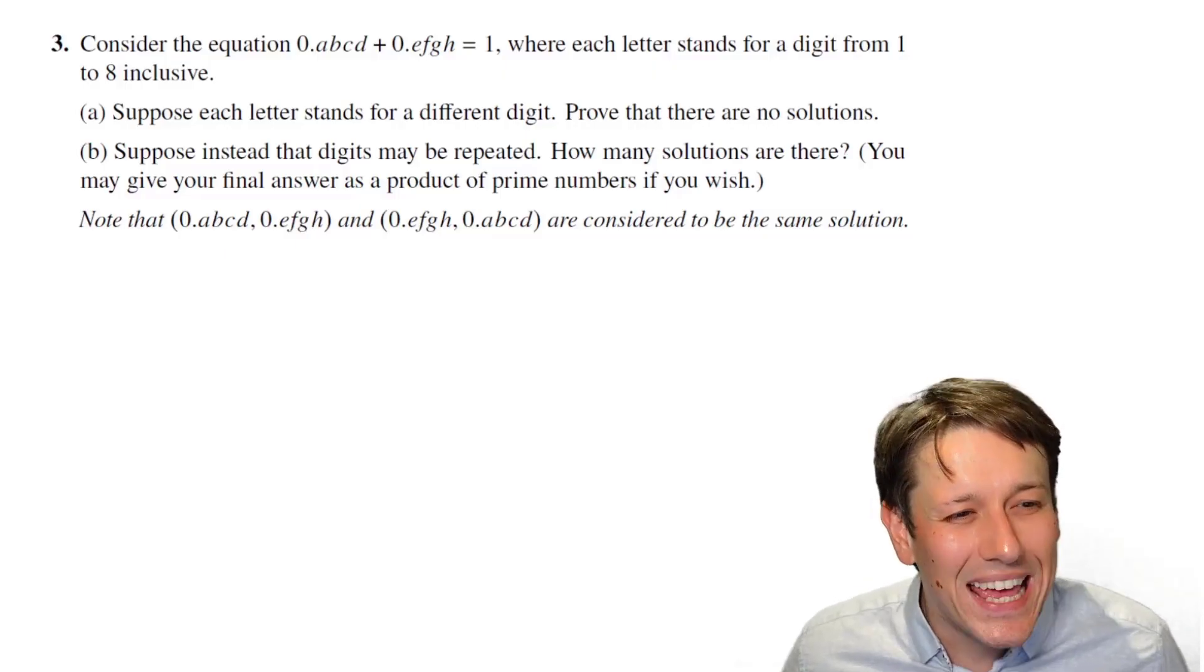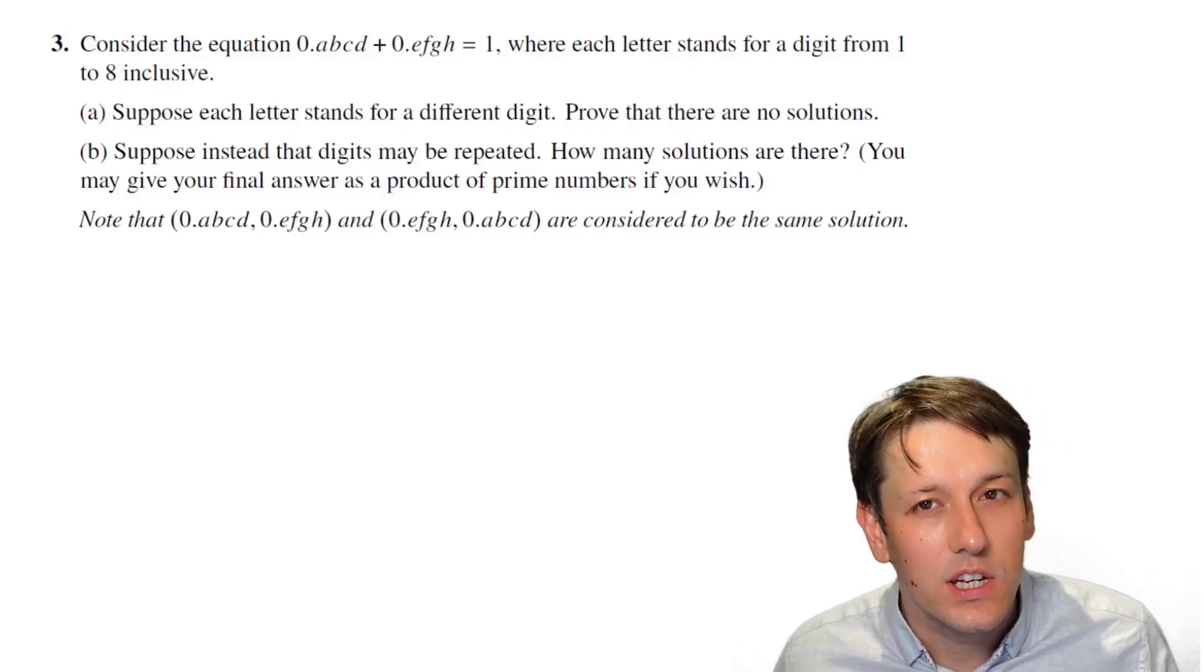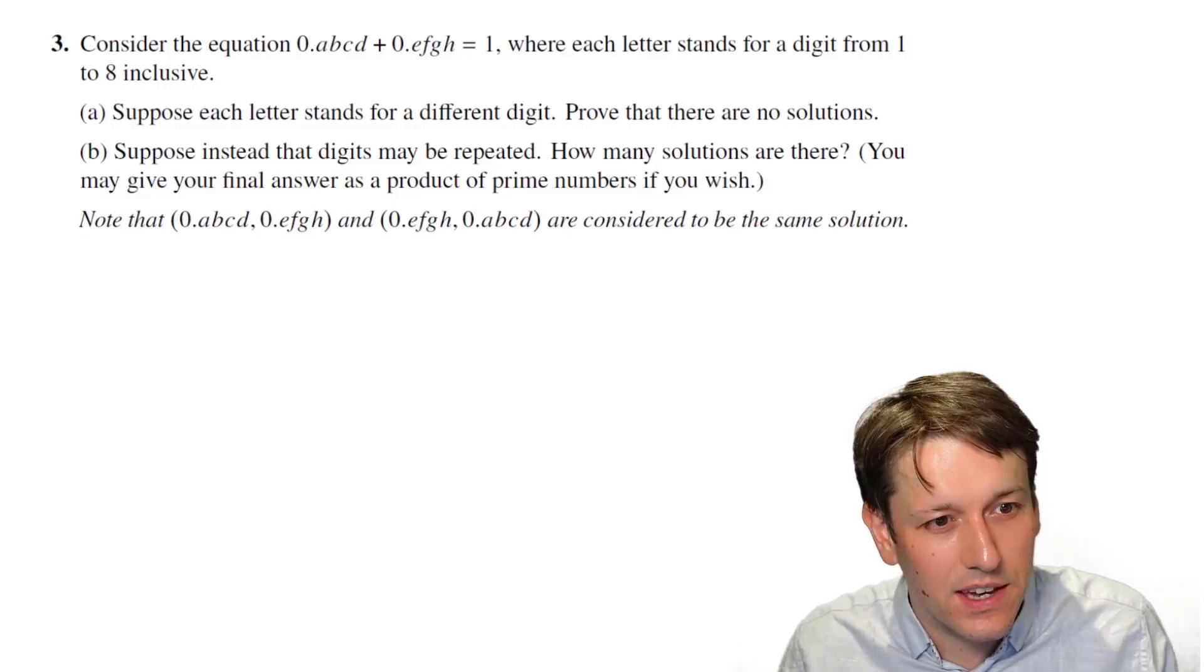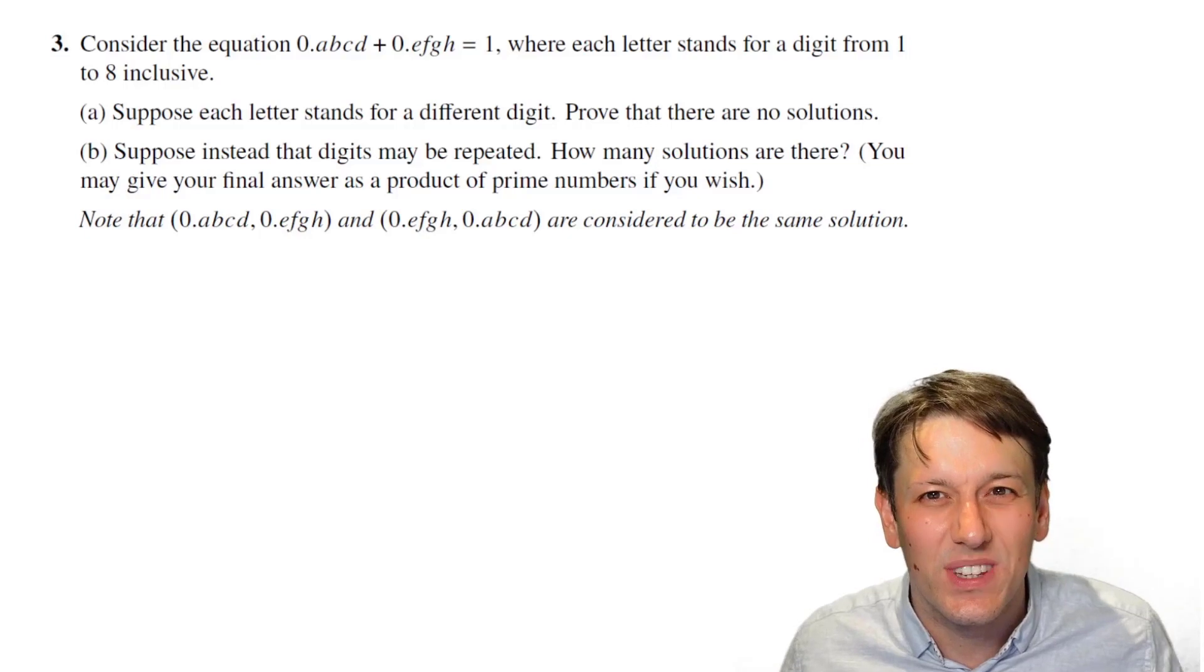Please do like the video and subscribe to the channel if you haven't already. So in part A, it says suppose each letter in this equation stands for a different digit. We want to prove there are no solutions, so we've got to choose A, B, C, D, E, F, G, and H to be all the different numbers from 1 to 8, and show there's no way of doing this.